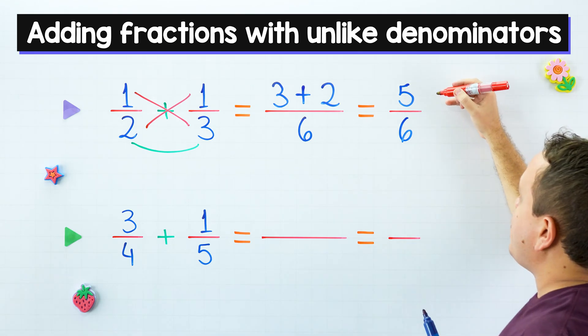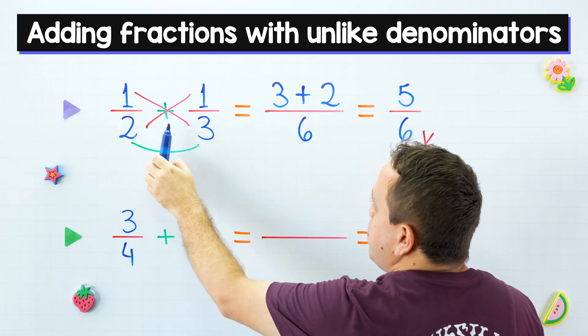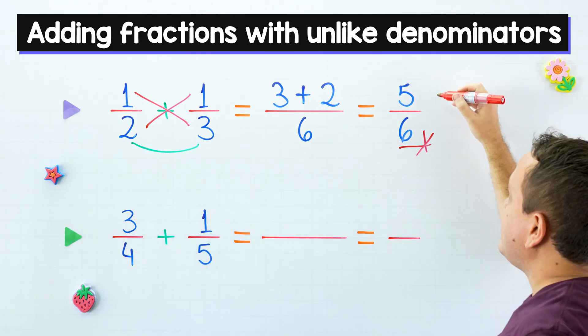That's it. We finish. Our final answer is five sixths. Yes, one half plus one third equals five sixths.